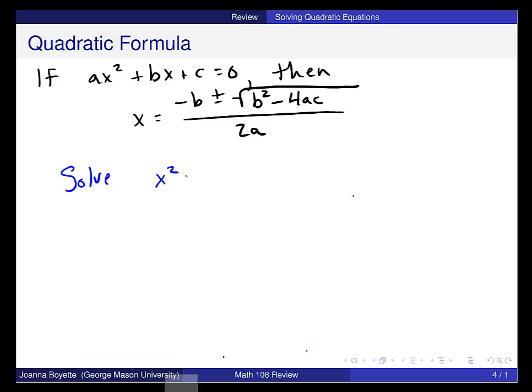Solve x squared plus 1 is equal to 4x. So the first thing that I need to do is get this into this ax squared plus bx plus c. I have my x squared and c over here, and I need to move the 4x over.